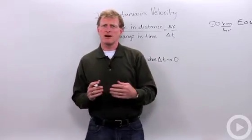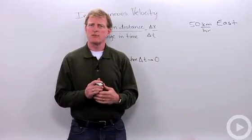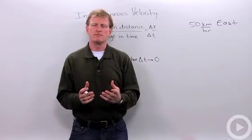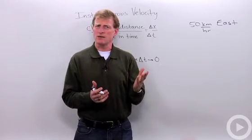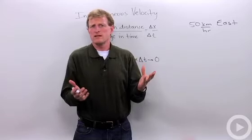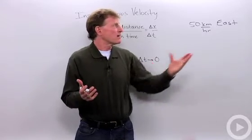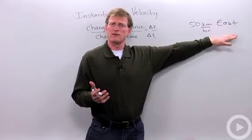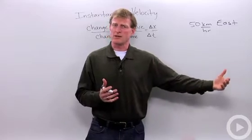For example, let's say I get in my car and set the cruise control for 50 kilometers an hour and I drive for an hour. My instantaneous velocity that whole time using cruise control was 50 kilometers an hour. And since we're studying velocities, we also have to give the direction. So I was driving 50 kilometers an hour east.